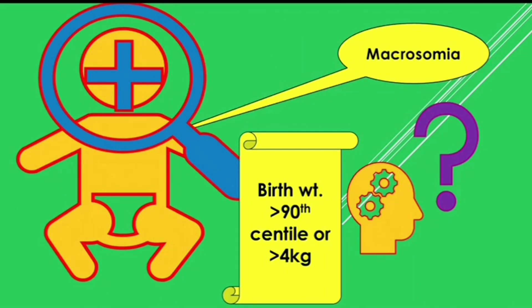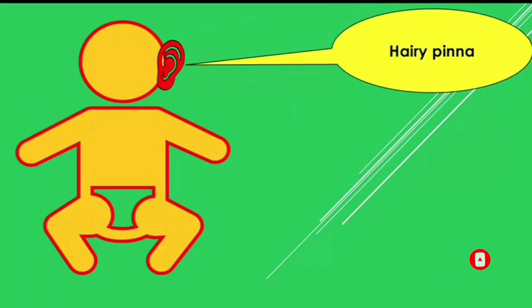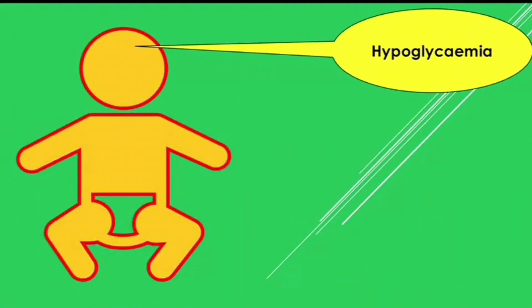The reason behind macrosomia: in the third trimester there is elevated maternal blood sugar, leading to a fetal and neonatal hyperinsulinemic state and neonatal hypoglycemia. You may also find these macrosomic babies with hypertrichosis.